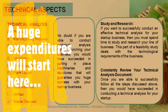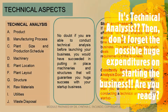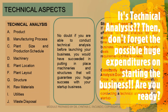Constantly review your technical analysis documents so once you are able to successfully follow all the steps discussed, then you would have succeeded in conducting a technical analysis for your startup. Technical analysis is composed of the following: A, for the product; B, manufacturing process; C, plant size and production schedule; D, for machinery; E, for plant location; F, for plant layout; G, for structure; H, for raw materials; I, for utilities; and the last is waste disposal.